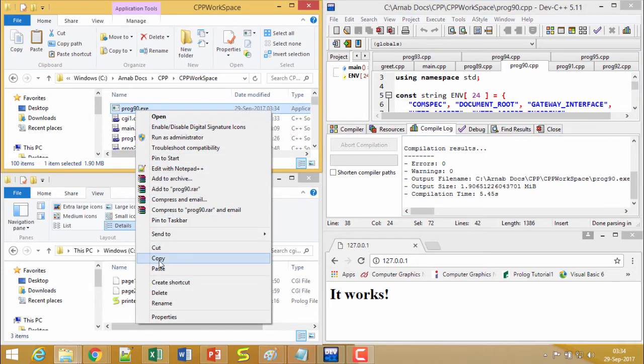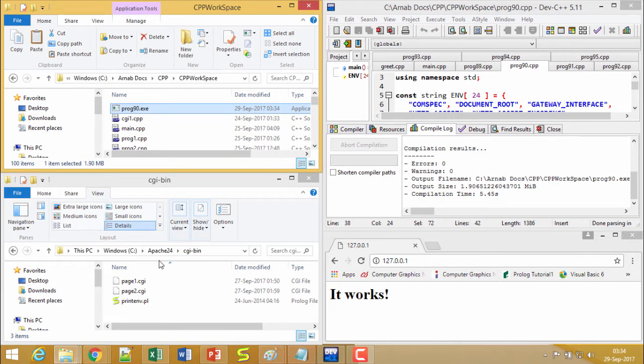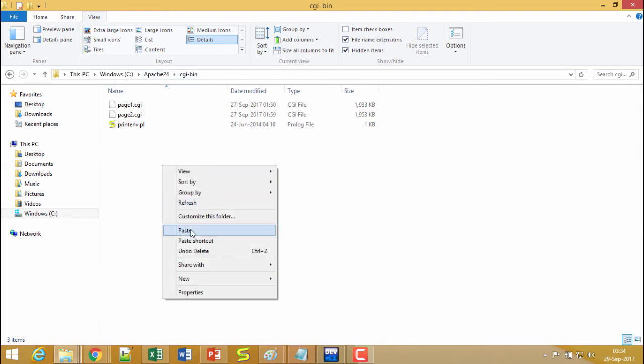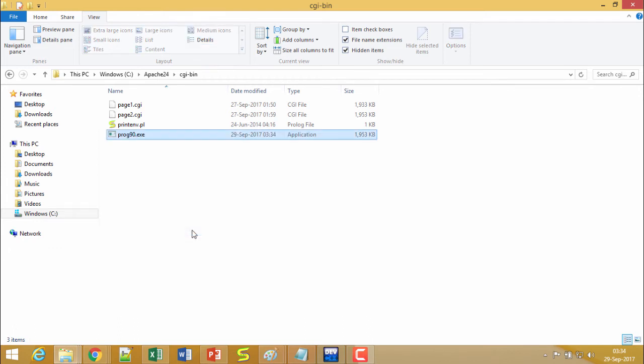I am making a copy of the same from the workspace, and then I am going to the respective folder, Apache24/cgi-bin, which we demonstrated in our earlier demonstration. I am pasting it here.